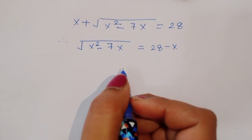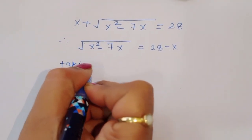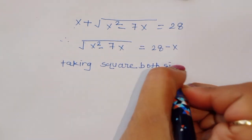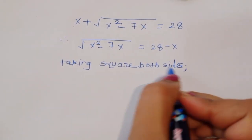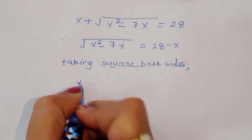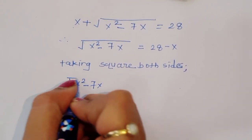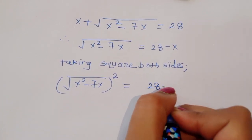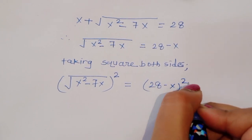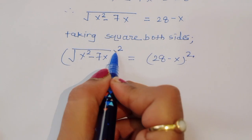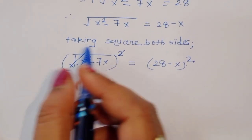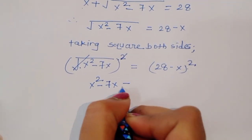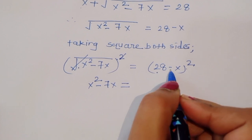Now we can take the square of both sides again, because we have to remove this square root. So square root of x squared minus 7x, whole square, is equal to 28 minus x whole square. Since the square and square root cancel, we get x squared minus 7x is equal to 28 minus x whole square.